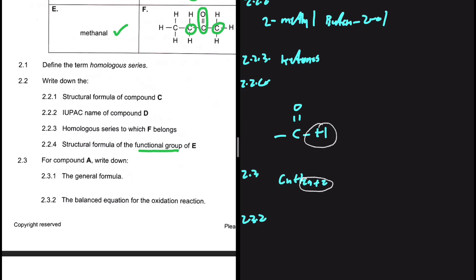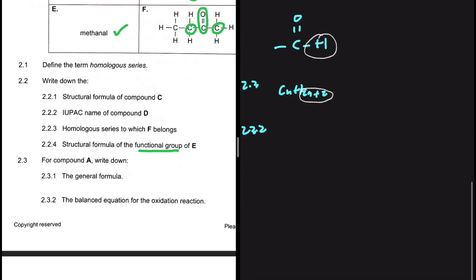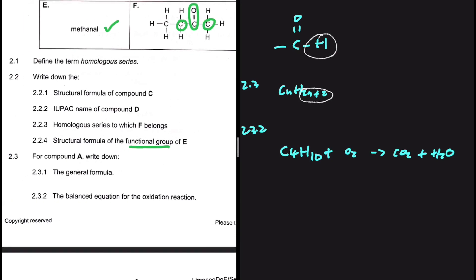For 2.3.2, we need the balanced equation for the oxidation of butane. Butane is C₄H₁₀, so we write: C₄H₁₀ + O₂ → CO₂ + H₂O. Even without balancing, there is a mark for the reactants and a mark for the products. To balance, start with carbon: four carbons on the left, so put a 4 in front of CO₂. Then hydrogen: 10 hydrogens, so put a 5 in front of H₂O. Always balance carbon first, then hydrogen, and oxygen last — that is the easiest method.